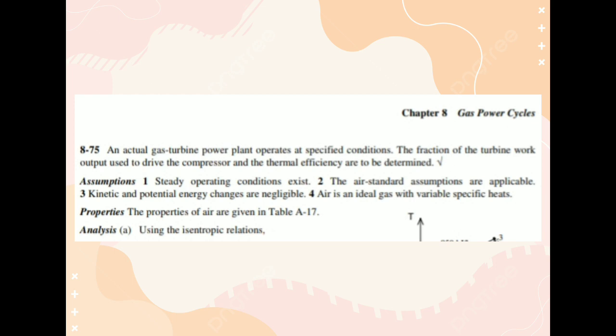An actual gas turbine power plant operates at specified conditions. The fraction of the turbine work output used to drive the compressor and the thermal efficiency are to be determined. The properties of air are given in table A17.